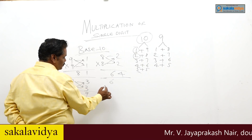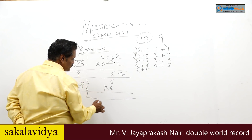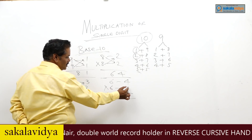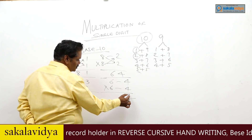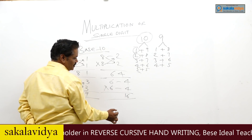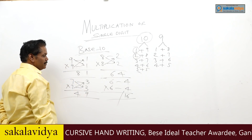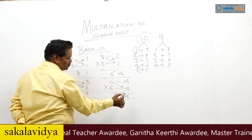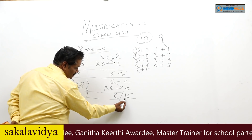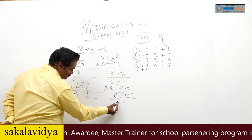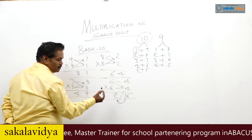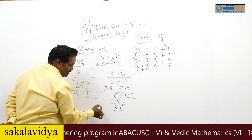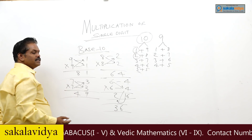6 into 6: complement of 6 is 4, and again 4. 4 into 4 is 16 — we are getting a 2-digit number. 6 minus 4 is 2. The tens digit 1 will be added: 2 plus 1 is 3. So 6 into 6 is 36.